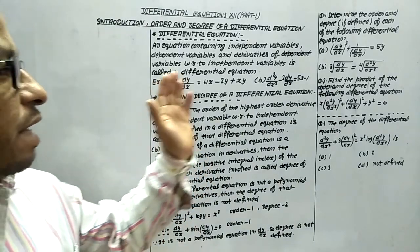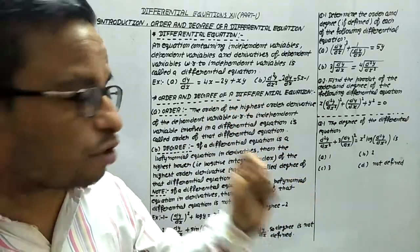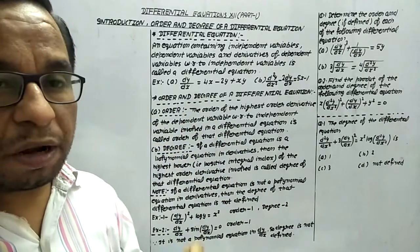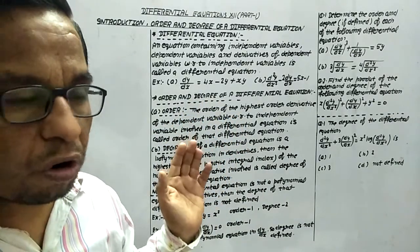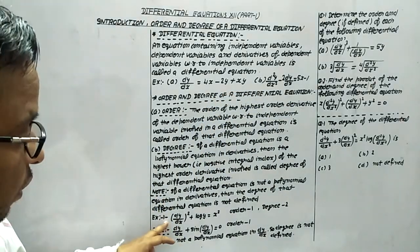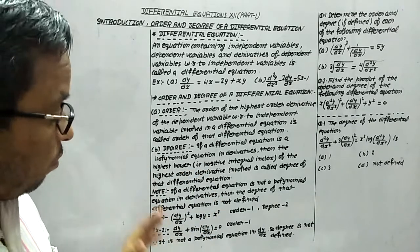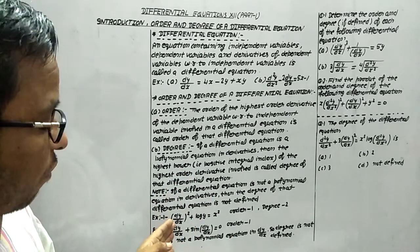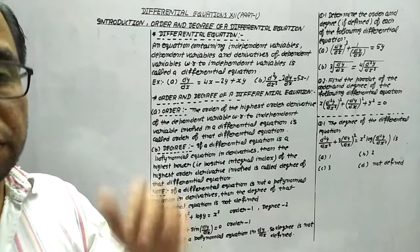Now let's look at the order and degree of a differential equation. The order of the highest-order derivative of the dependent variable with respect to the independent variable involved in a differential equation is called the order of that differential equation. For example, (dy/dx)² + log y = x², which has dependent variable y, independent variable x, and the derivative dy/dx.